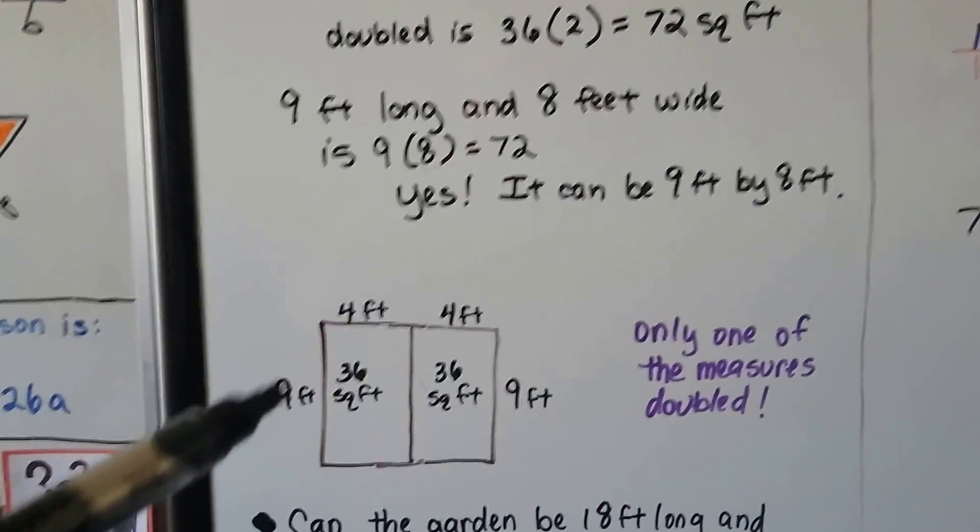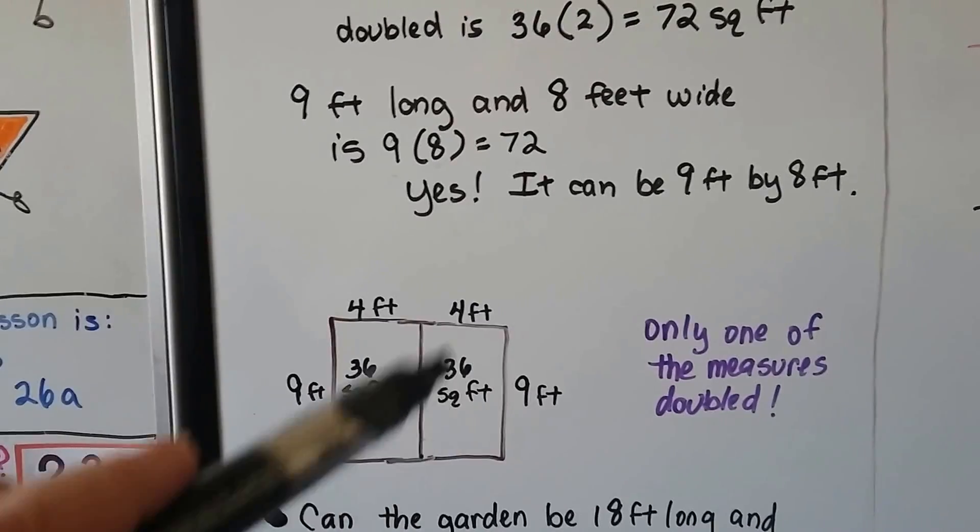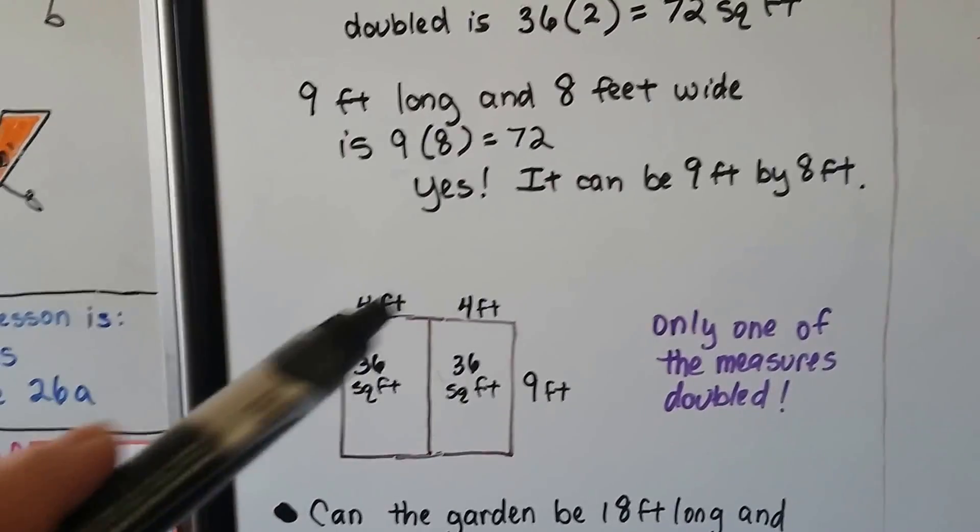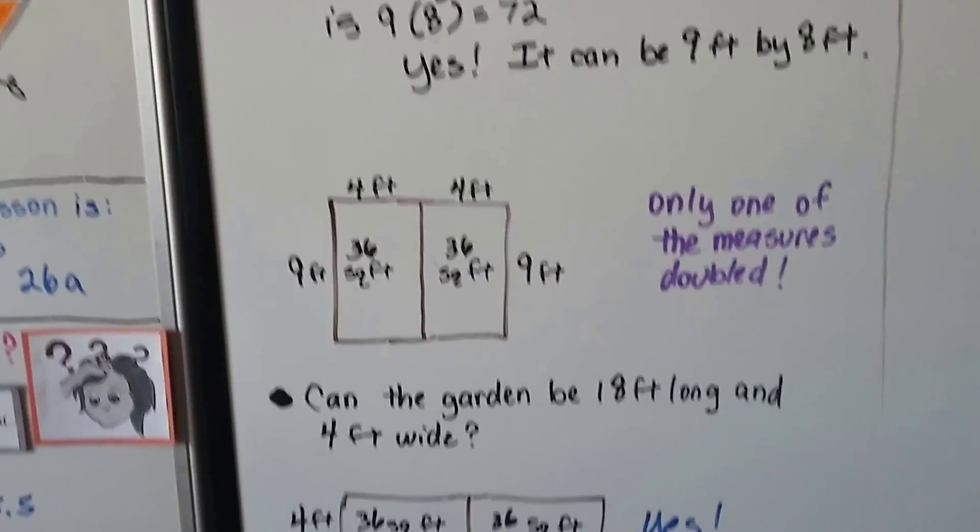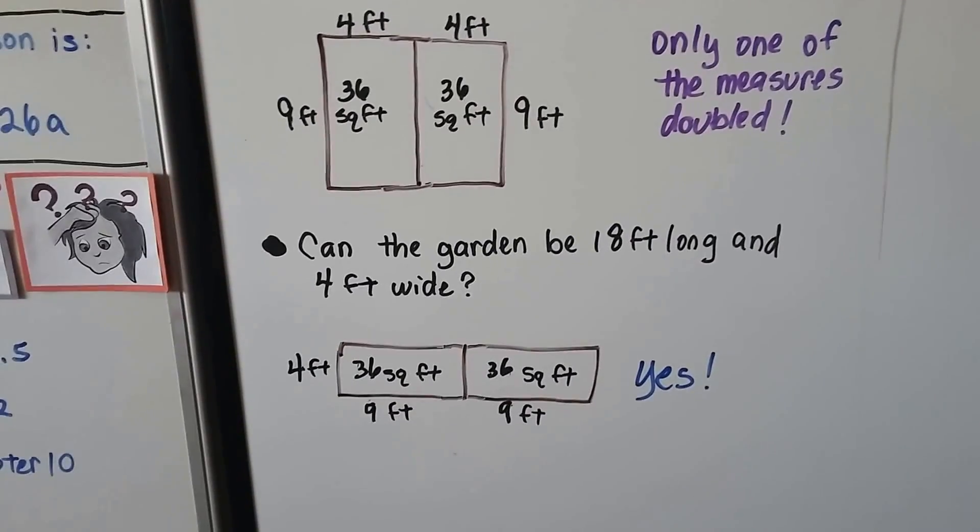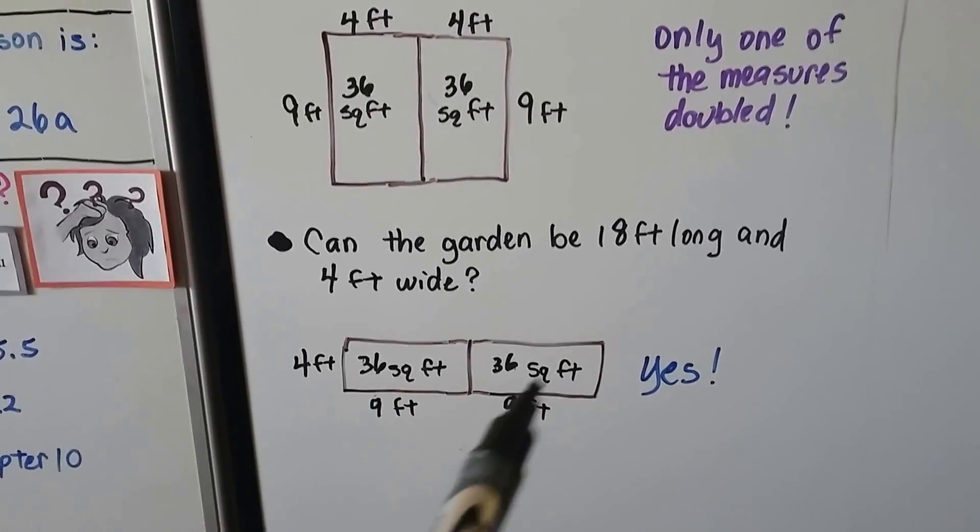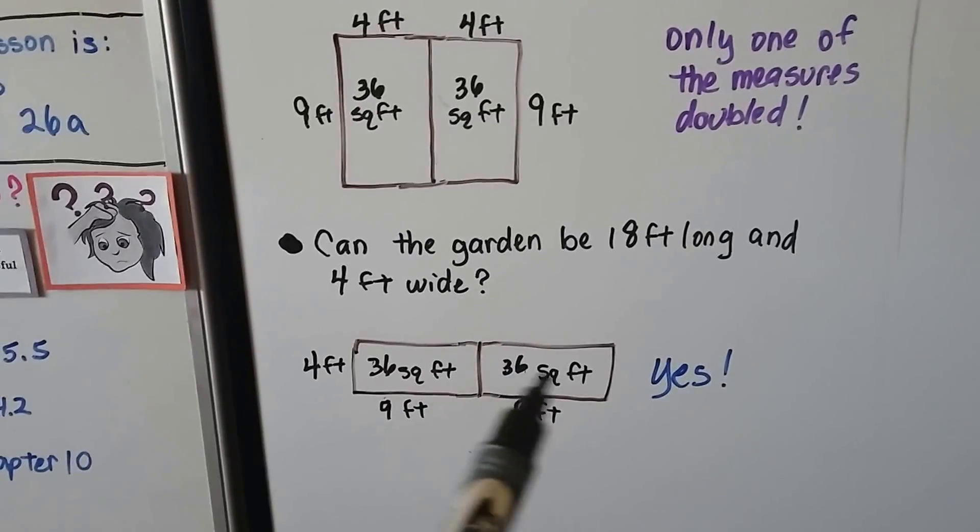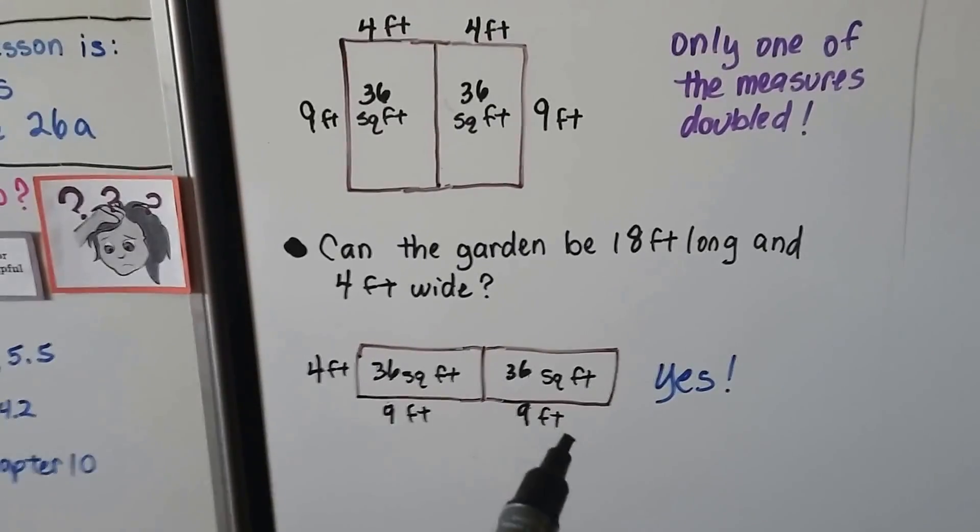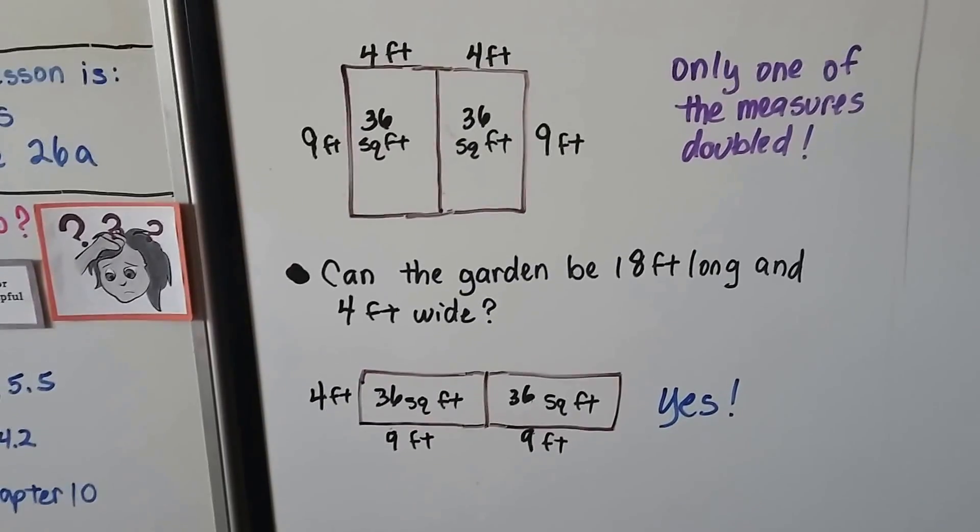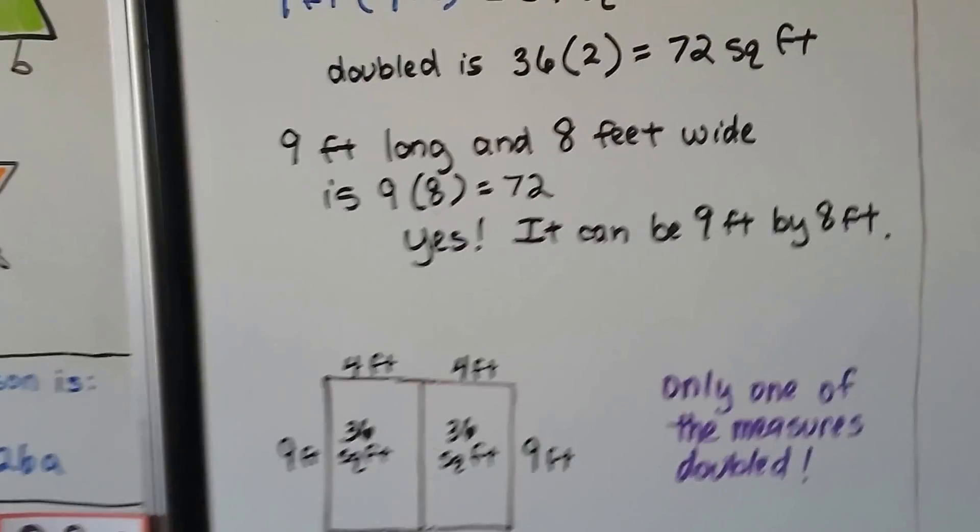What happened is she had a nine foot by four foot square garden, square foot garden. It was thirty-six square feet. And, she doubled it by putting another nine by four. So, the only measure that doubled was the four. See that? The nine stayed the same. Can the garden be eighteen feet long and four feet wide? That would double it. Here she's got the nine by four garden and another nine by four garden. But, she lined them up this way. So, now the four foot part is staying the same. But, the nine foot part is doubling to eighteen. So, be careful when you're doubling square footage. Only one of the numbers are going to double.